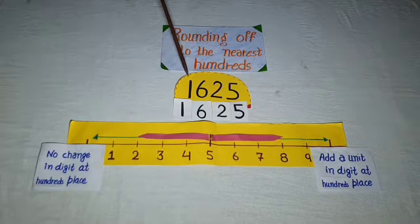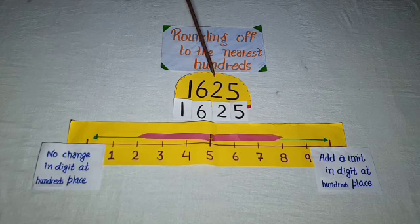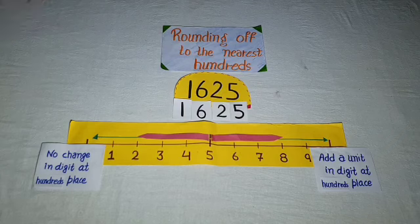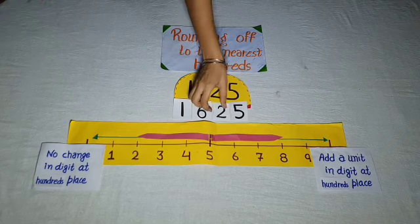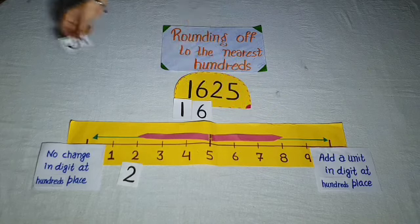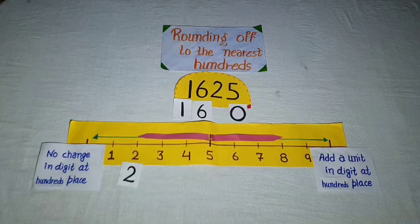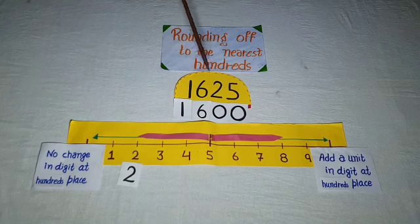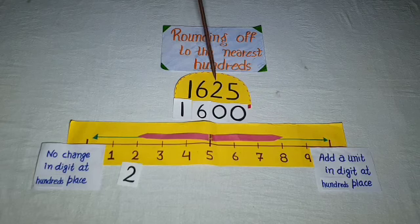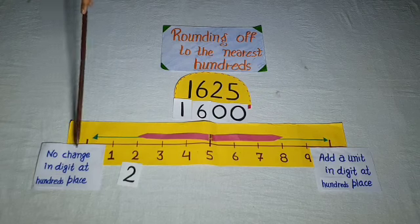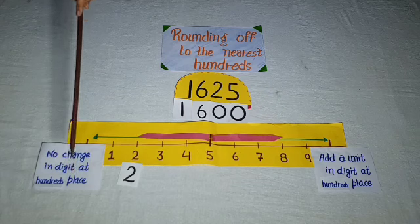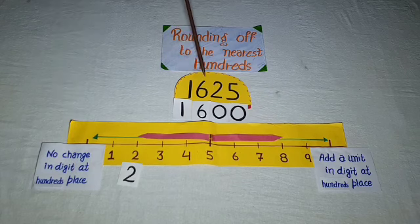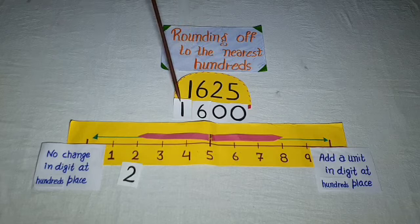Number is 1625. Here, the digit 2 is at the tens place, so we put 0 for the ones place and the tens place. Students, the digit 2 is at the tens place, so there is no change in the digit at the hundreds place. So 1625 can be rounded off to 1600.